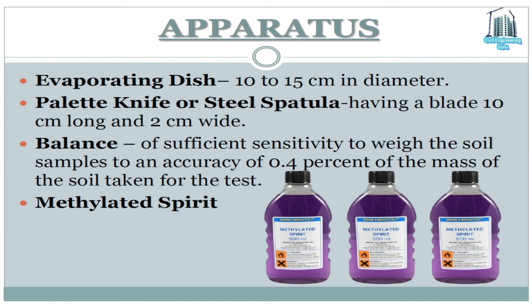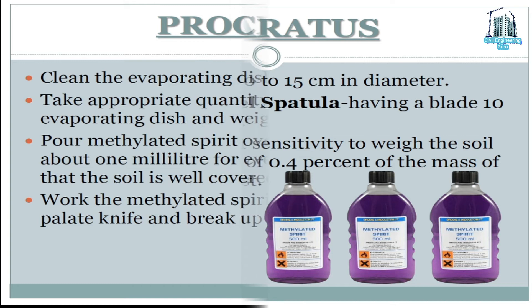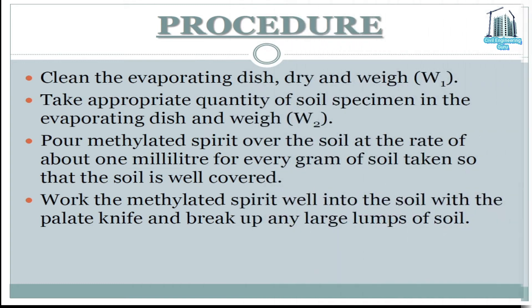Methylated spirit. Procedure: clean the evaporating dish, dry and weigh it as W1. Take an appropriate quantity of soil specimen in the evaporating dish and weigh as W2. Pour methylated spirit over the soil at the rate of about one milliliter for every gram of soil taken, so that the soil is well covered.